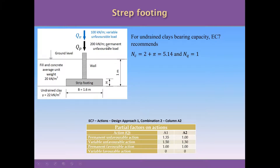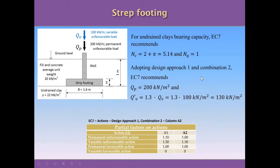We have two loads: one variable load and one permanent load. Checking the table for Design Approach 1, Combination 2, for permanent unfavorable action the coefficient is 1.0, so we don't need to change the permanent load. For variable unfavorable action the coefficient is 1.3, so we multiply the variable load by 1.3. The permanent load remains 200 kN per meter and the modified variable load is 1.3 × 100 = 130 kN per meter.